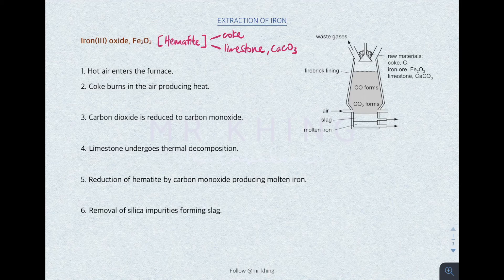All the reactions happen in the furnace. In order to extract iron from the iron compound, these are the six steps that you have to remember, every single step, followed by the corresponding chemical equations.